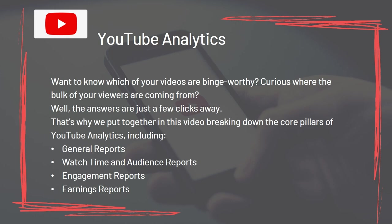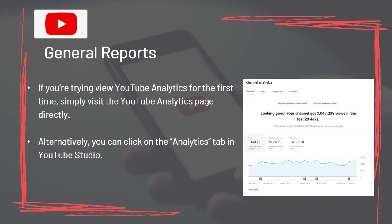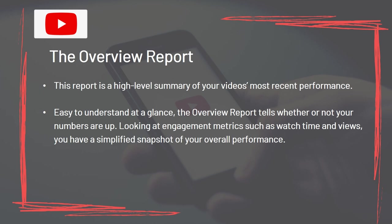General Reports: To view YouTube analytics for the first time, visit the YouTube analytics page directly or click on the Analytics tab in YouTube Studio. The Overview Report is a high-level summary of your video's most recent performance — easy to understand at a glance, it tells whether your numbers are up, looking at engagement metrics such as watch time and views. The Real Time Report shows an estimate of view count data for your most recent videos, including people watching in real time, and can alert you to spikes in engagement.